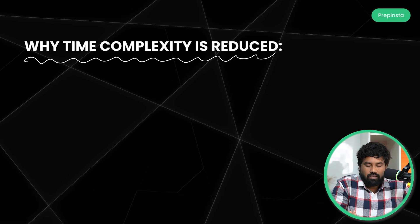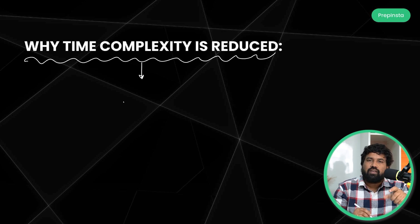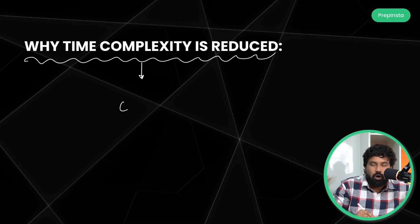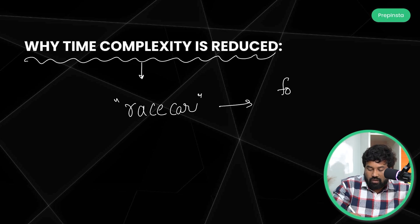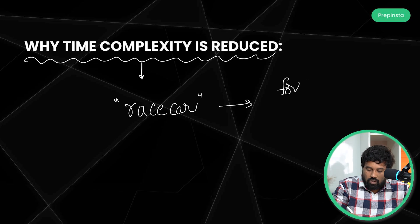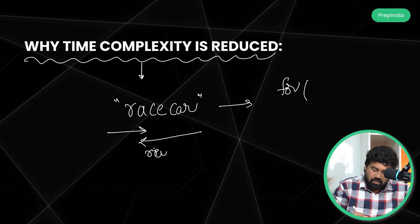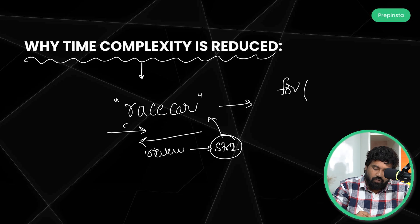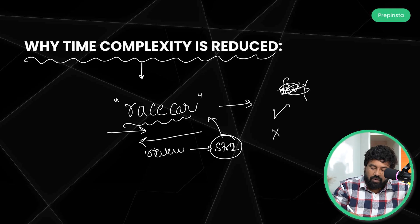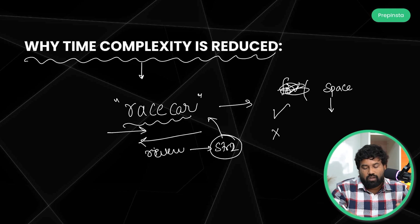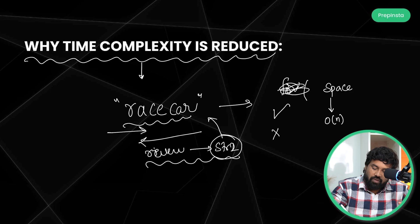Let's look at time complexity and how it gets reduced. For example, if you want to check whether a given string is a palindrome — take the popular problem 'race car.' If you use a for loop, what you'd do is reverse the string, store it in a second string variable, then compare string one and string two to see if they're equal. The problem is you've created an extra data structure, so space complexity becomes O(n) and time complexity is also O(n).